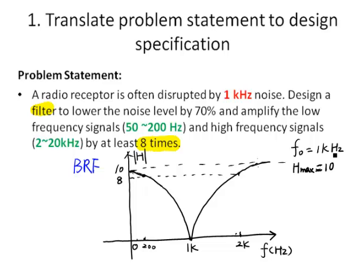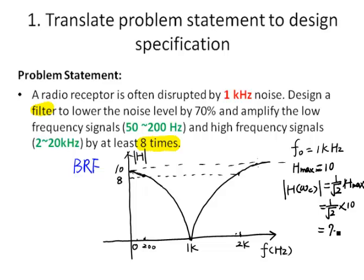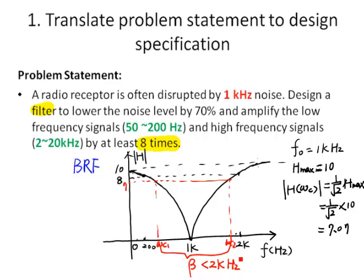Let's look at the cutoff frequencies and pass band. We know the maximum gain of the circuit is 10. The cutoff frequency is defined as the point where the magnitude of the transfer function is 1 over square root of 2 times the maximum magnitude — that is 1 over square root of 2 times 10, which is about 7.07. So at the two cutoff frequencies, the magnitude of the transfer function is around 7. From our analysis, the pass band bandwidth is defined as the difference of the two cutoff frequencies, which should be less than 2 kHz.